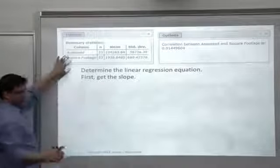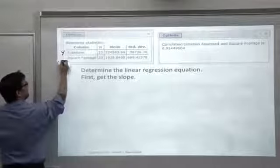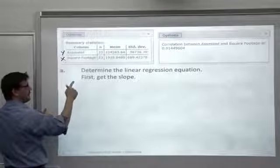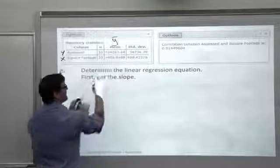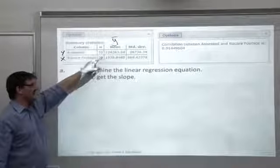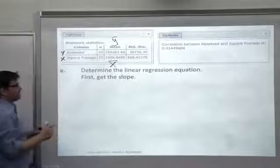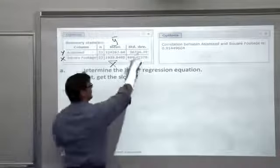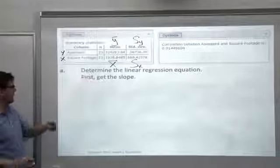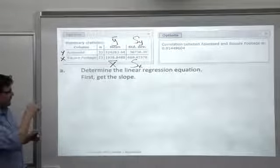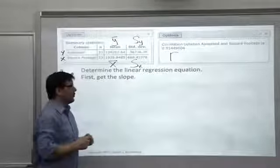I've got the summary statistics here. Assessed value is our Y variable, and square footage is X. 33 homes in the neighborhood. The means: the top one is Y bar, the mean assessed value. In this neighborhood, on average, the homes are assessed for about $224,000. Average square footage 1935, we would call that X bar. We've got our standard deviations: S sub Y is hooked up with the Y variable, and the 669 is S sub X. Over there is the correlation, we can see that is pretty strong, .914.